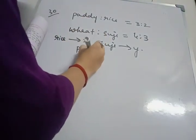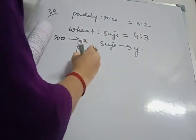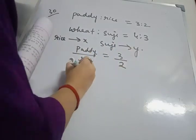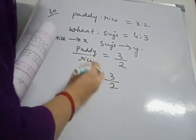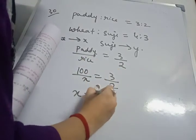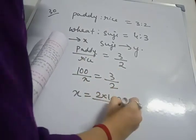Now what are you going to write? So paddy by rice equals to 3 by 2. Paddy we know it is 100. Rice x. So 3 by 2. Cross multiplication x equals to 2 into 100 by 3.